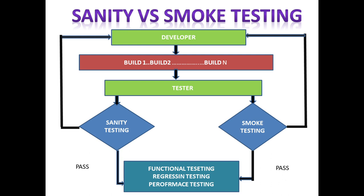Smoke testing focuses on modules or functionality that have high priority or are very critical. To perform smoke testing there are scripts or documents, and you must follow those documents. Smoke testing is a subset of regression testing, and the key point is that in smoke testing the end-to-end system or whole system is verified.